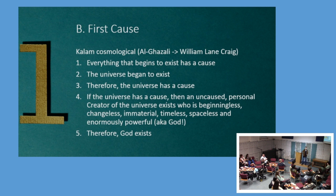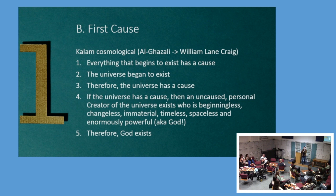Most scientists and philosophers would say there was a moment when the universe came into existence. Therefore the universe has a cause. And if the universe has a cause, then an uncaused personal creator of the universe exists — one who is unlike the universe. The universe has a beginning; this creator has no beginning. The universe changes; this creator does not. The universe is material; the creator is immaterial. The universe operates in time and space; this creator is outside of time and space, and is incredibly powerful.